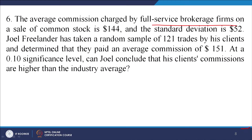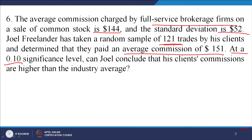Let us look at this example: the average commission charged by full-service brokerage firms on a sale of common stock. The average commission is 144 dollars and the standard deviation is 52 dollars. Joel Freelander has taken a random sample of 121 rates from his clients and determined that they paid on average a commission of 151 dollars at 0.10 significance level. Can Joel conclude that his clients' commissions are higher than the industry average?